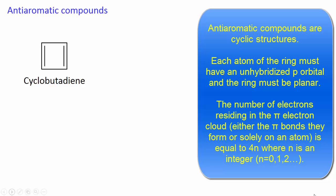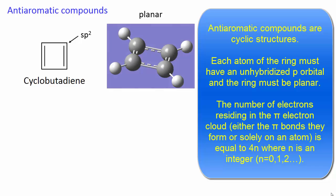Anti-aromatic compounds are cyclic structures. Each atom of the ring must have an unhybridized p-orbital, and the ring must be planar. The number of electrons residing in the pi electron cloud, either the pi bonds they form or solely on an atom, is equal to 4n, where n is an integer.